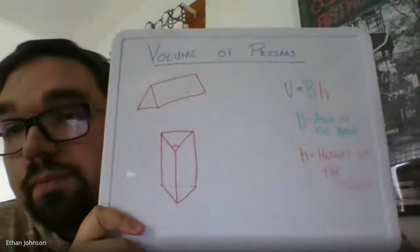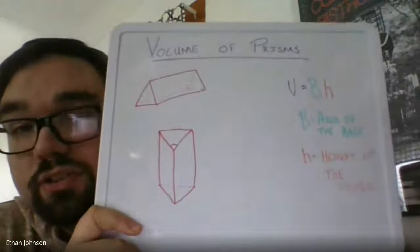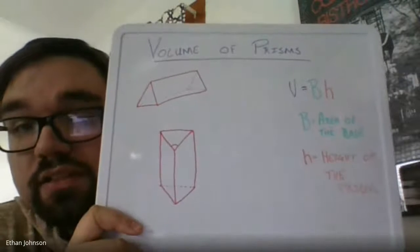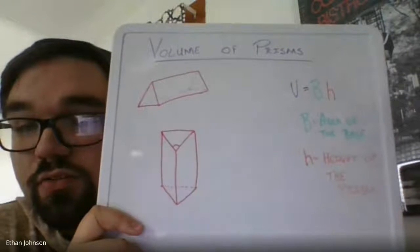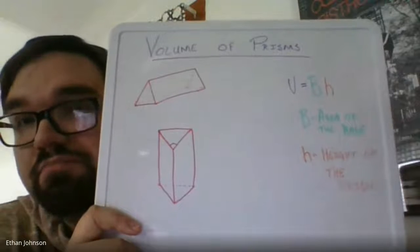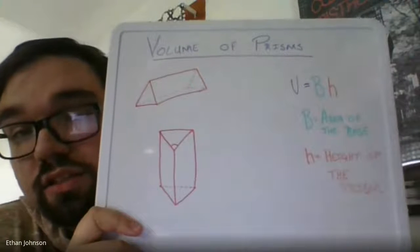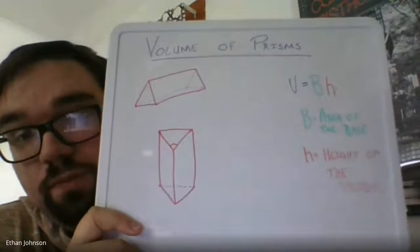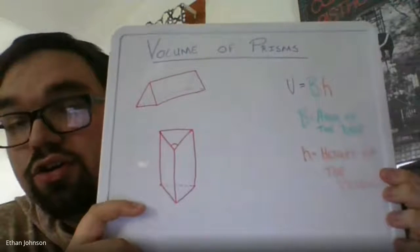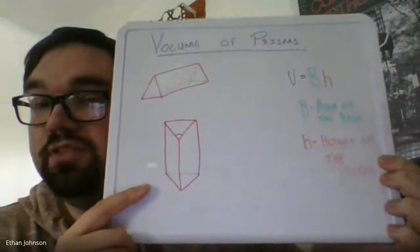Now I do want to point out, because we're talking about prisms, the shape of the base is going to be different for each of the prisms. Unlike in cylinders where each of the bases are a circle, in this case we have prisms that are triangular. These are triangular prisms.